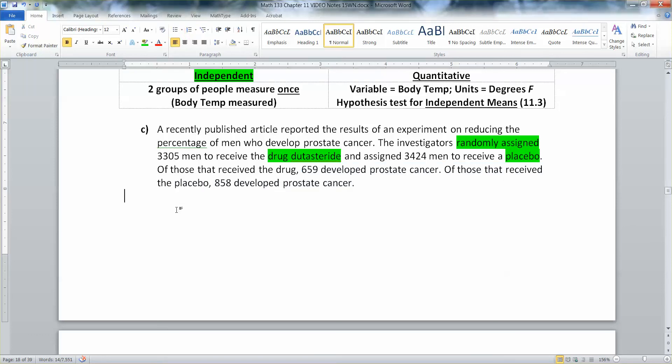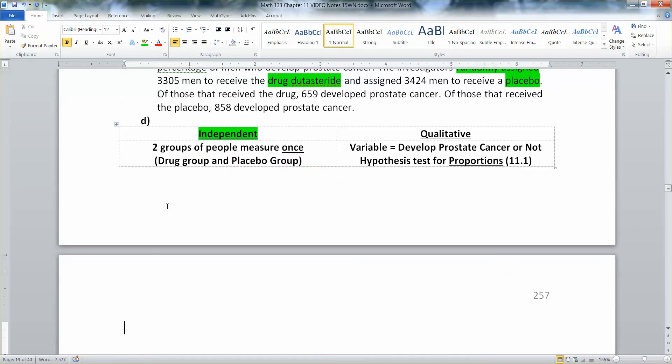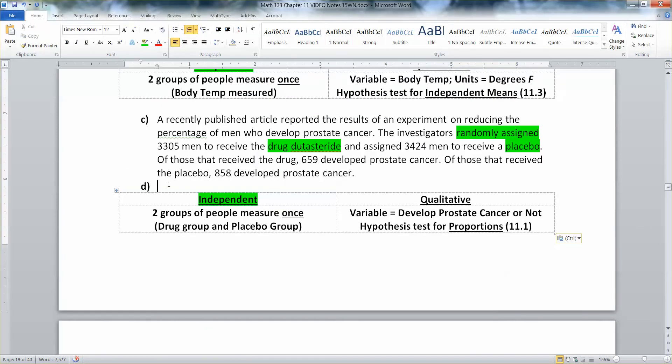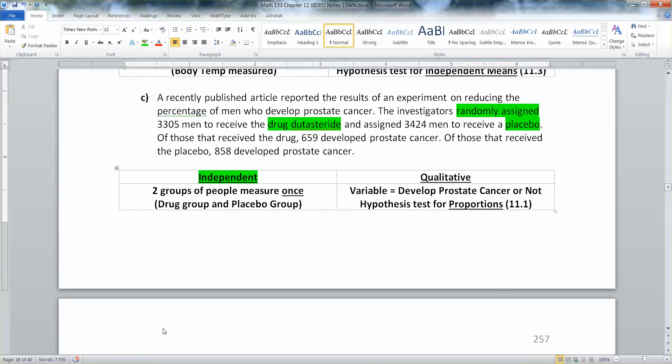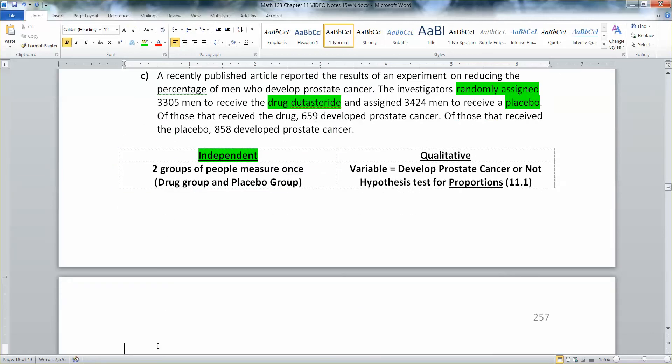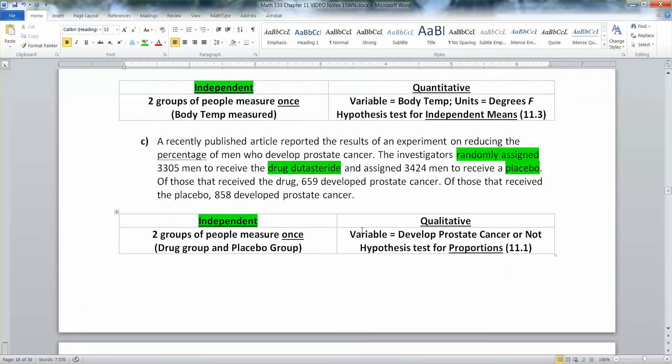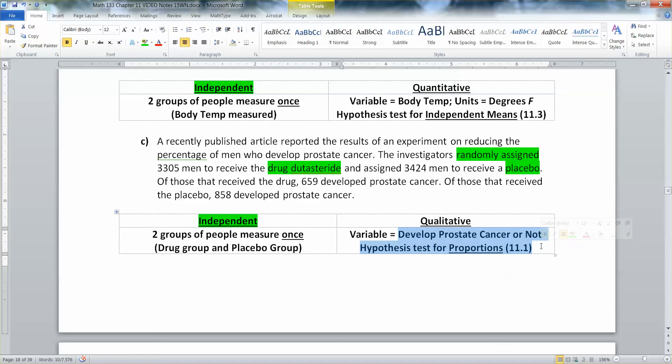And that means that it would not be covered in this section. Independent with a qualitative variable like that would actually be the next section, which is 11.1, which I realize means we're going a little bit backwards, but I prefer covering 11.2 first and then working my way backwards to 11.1. All right. So it's two groups measured once, the drug group and the placebo group. And then the variable is whether they develop prostate cancer or not. That's qualitative. And that means it's 11.1.